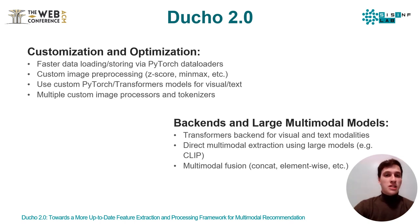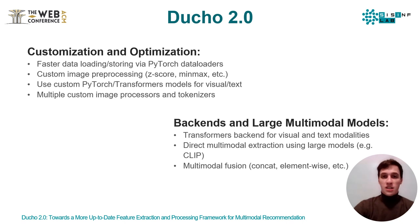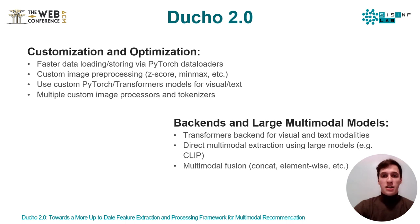Moreover, Duccio 2.0 integrates transformers libraries for visual and textual modalities and allows performing extraction via multimodal-by-design models — for instance, CLIP — allowing users to specify a fusion operation like concatenation, element-wise sum, and so on.